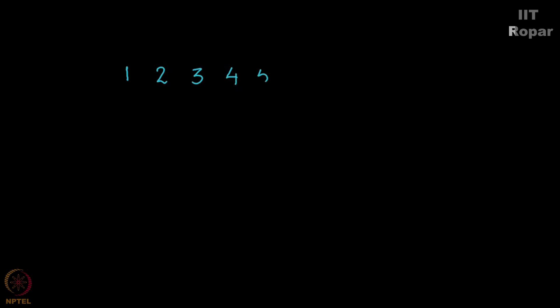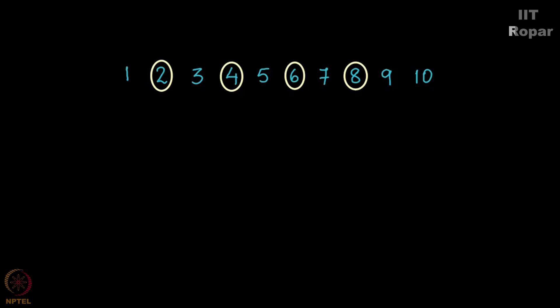Consider the 10 integers 1, 2, 3, 4, 5, 6, 7, 8, 9, and 10. What are the even integers here? 2, 4, 6, 8, and 10. These are the even integers and they must not be in their original position — in these positions. Now how can I place them?